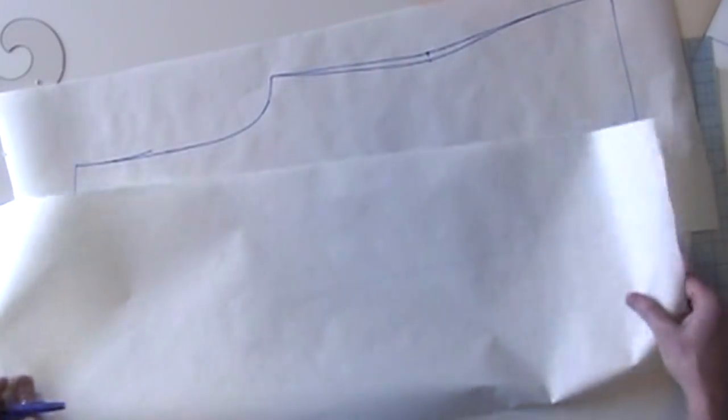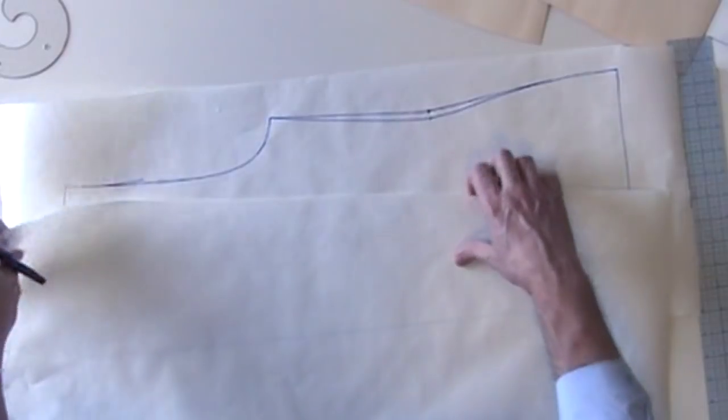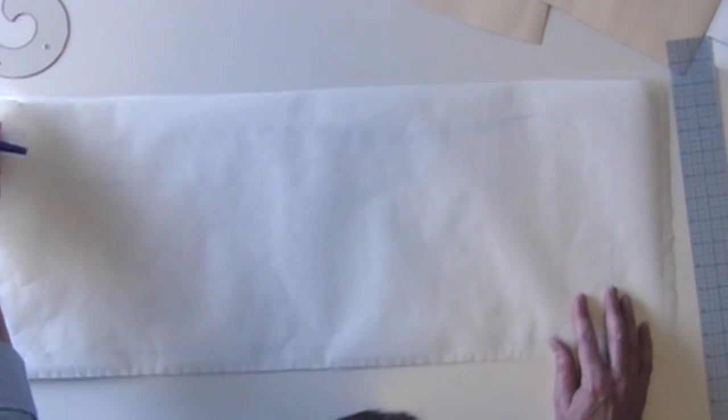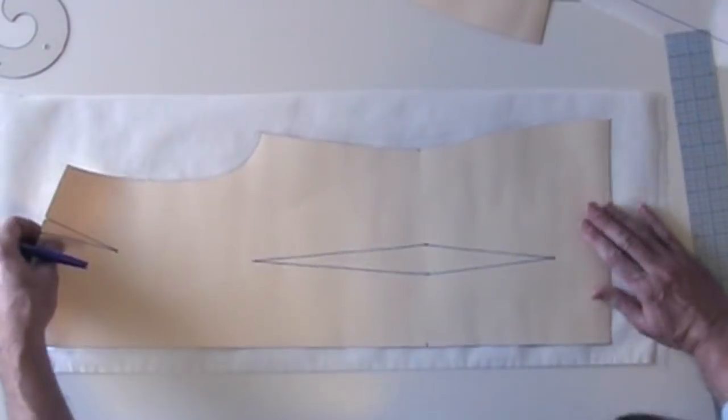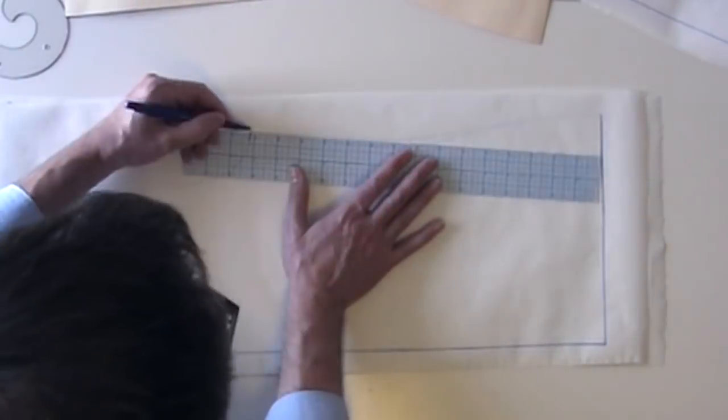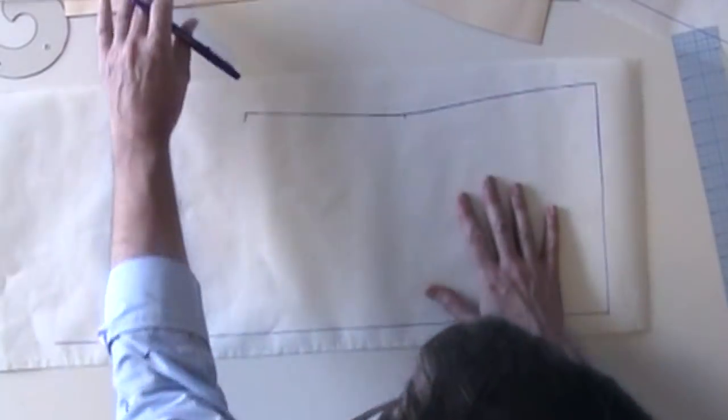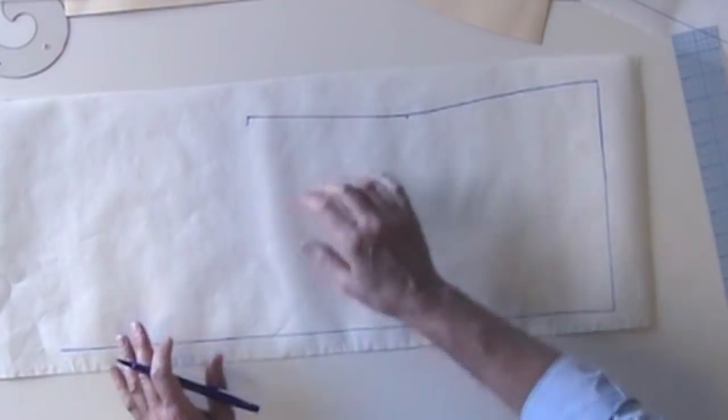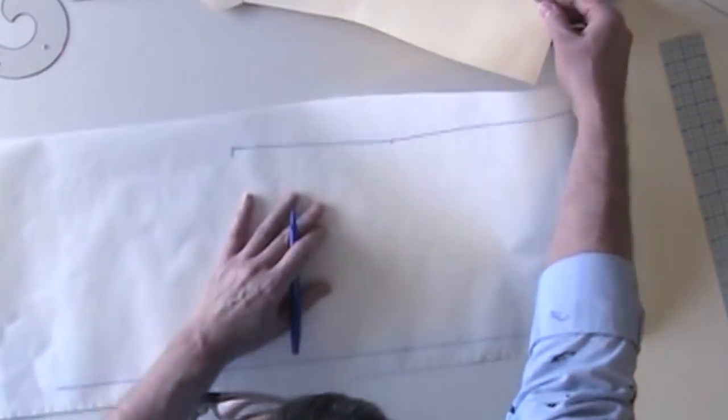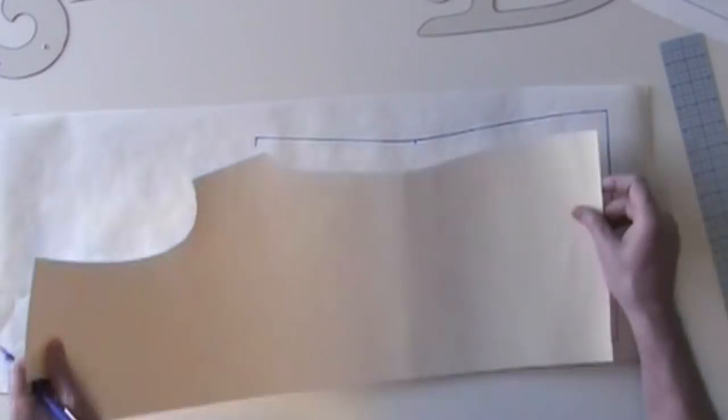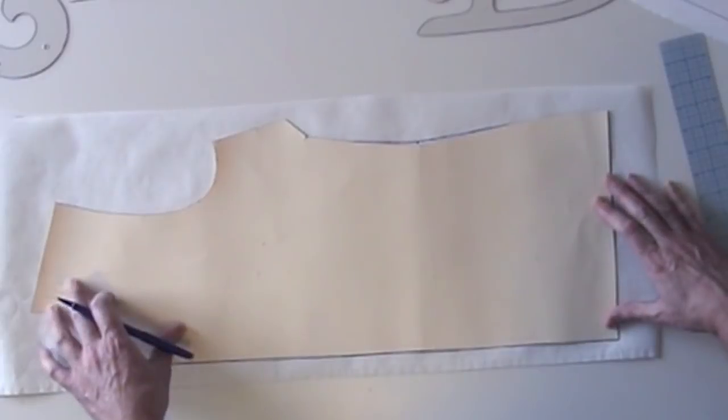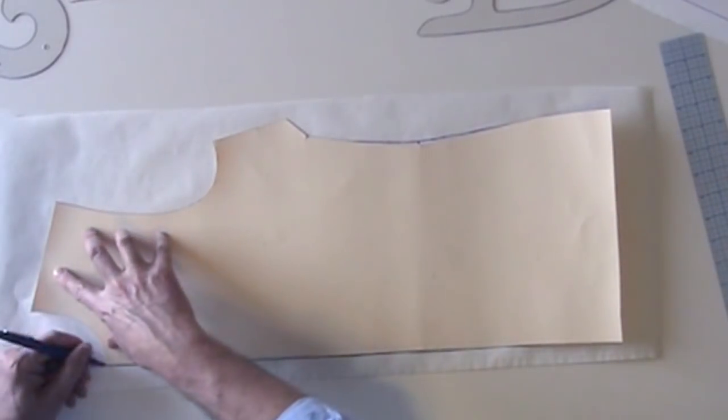I'm going to simply trace off the back at the center back and side and bottom. I'm going to trace off around the bottom and side. And I can fetch my front blouse sloper, match it up at the center front and bottom. I can trace off my neck and shoulder.